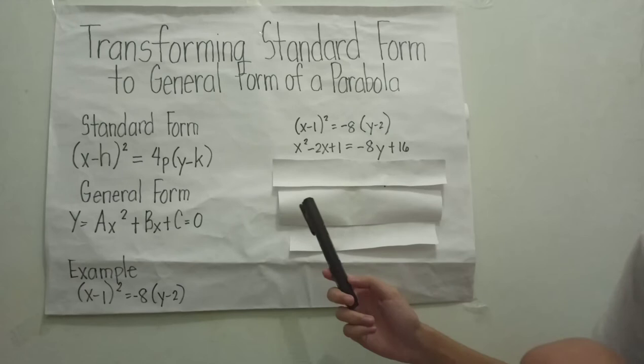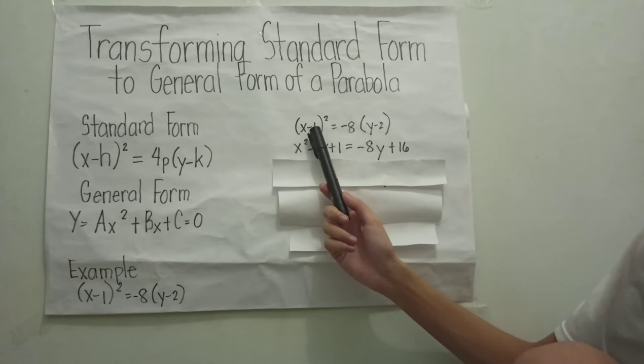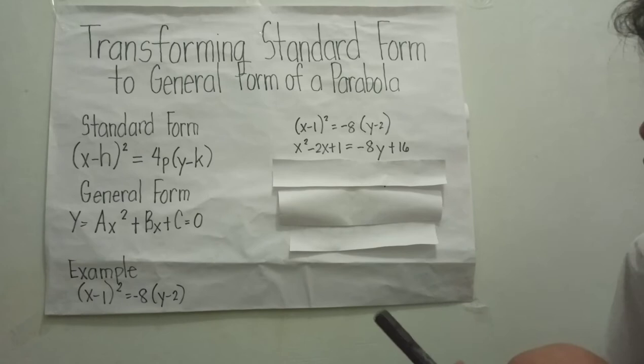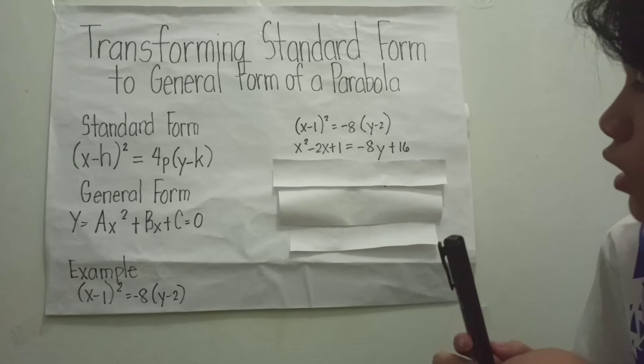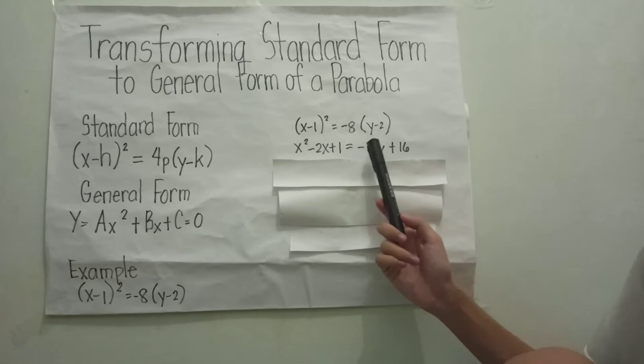Here's how we expanded: first, we square the first term x to get x squared. Then multiply x by negative 1 and multiply by 2 to get negative 2x. Then square the last term, negative 1, to get positive 1. On the right side, we use the distributive property and multiply negative 8 by (y minus 2) to get negative 8y plus 16.